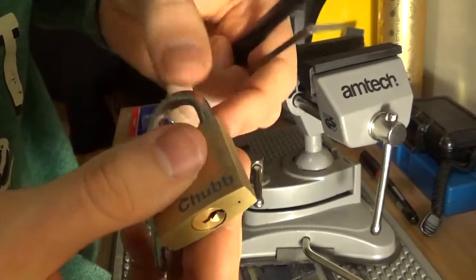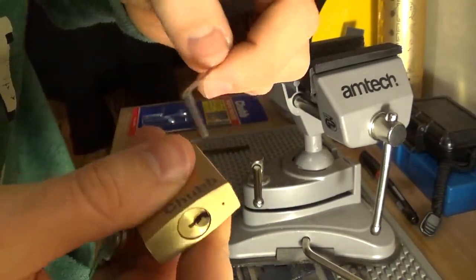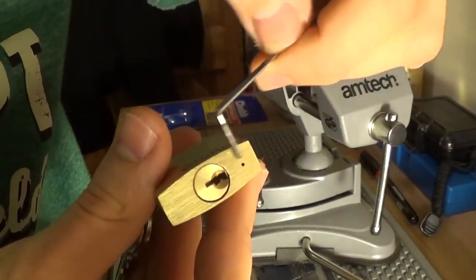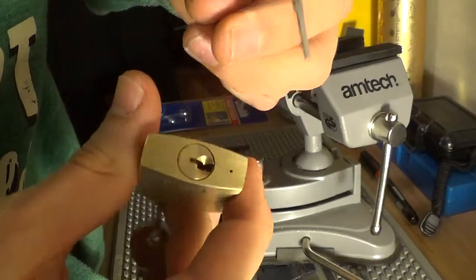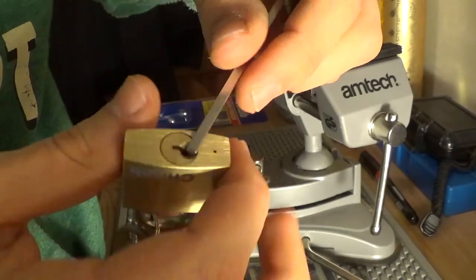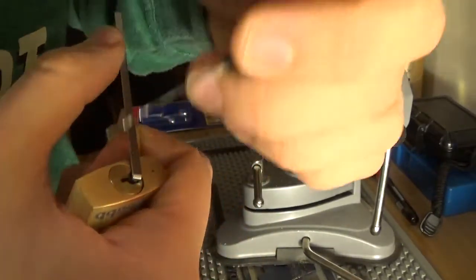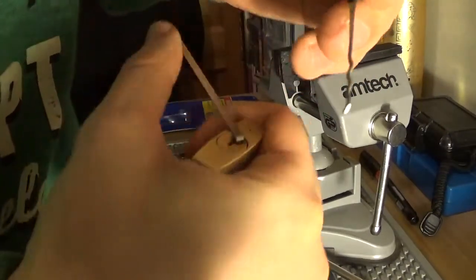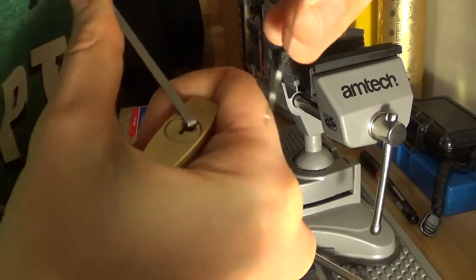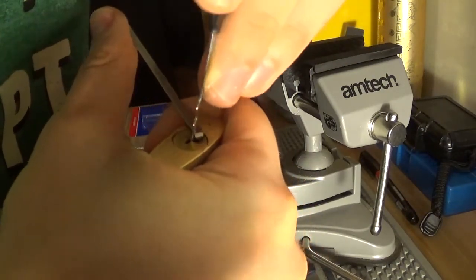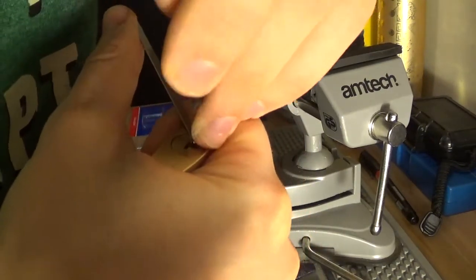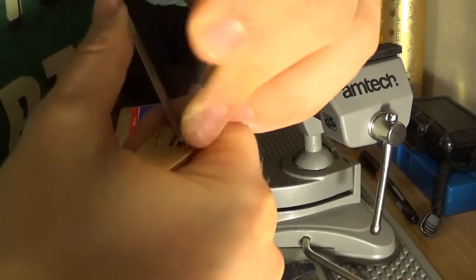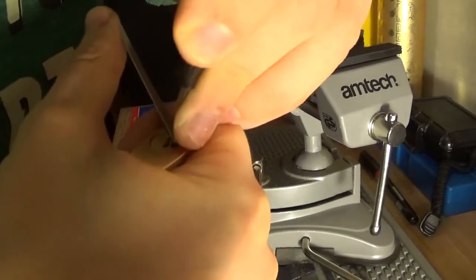And last but not least, of course, because it is double locking, unless maybe you pull on the shackle and then tension the locking bars and then individually move them out of the way like Lock Noob did, you won't be able to bypass it with a knife tool easily. So I'll try to rake it, try and get lucky.